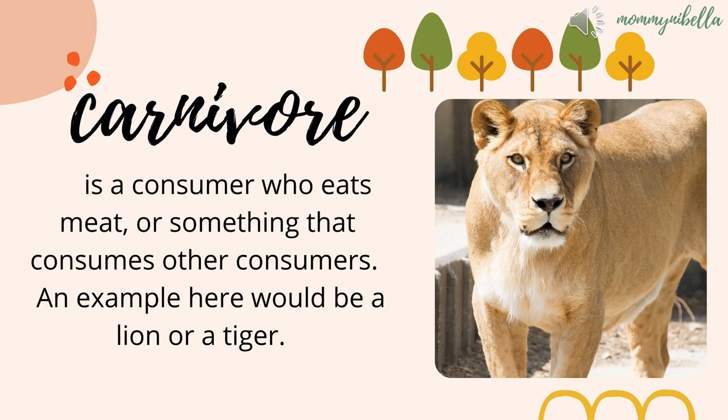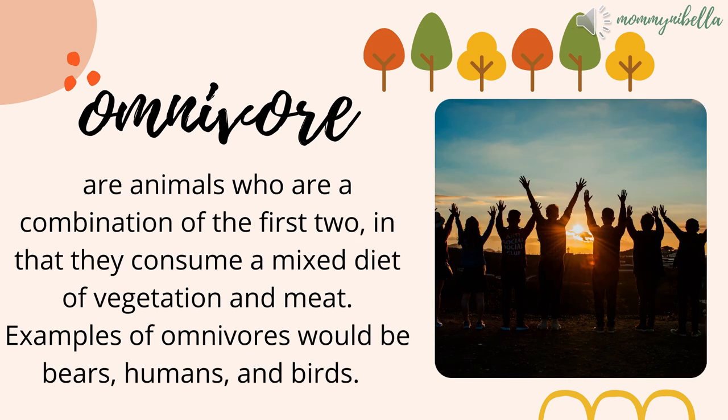A carnivore is a consumer who eats meat, or something that consumes other consumers. An example here would be a lion or a tiger. Omnivores are animals who are a combination of the first two, in that they consume a mixed diet of vegetation and meat. Examples of omnivores would be bears, humans, and birds.